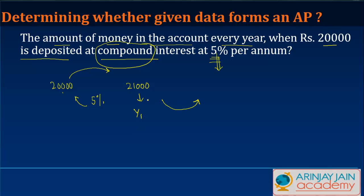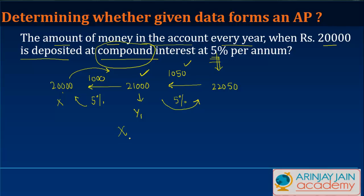In the second year, I again get 5%, but in compound interest this 5% is not on 20,000 — it is on 21,000. So I would actually get 1,050 and my balance will become Rs.22,050. The difference between year 2 and year 1 was 1,000, and between year 3 and year 2 is 1,050. Since the difference is not common, this is not an arithmetic progression.